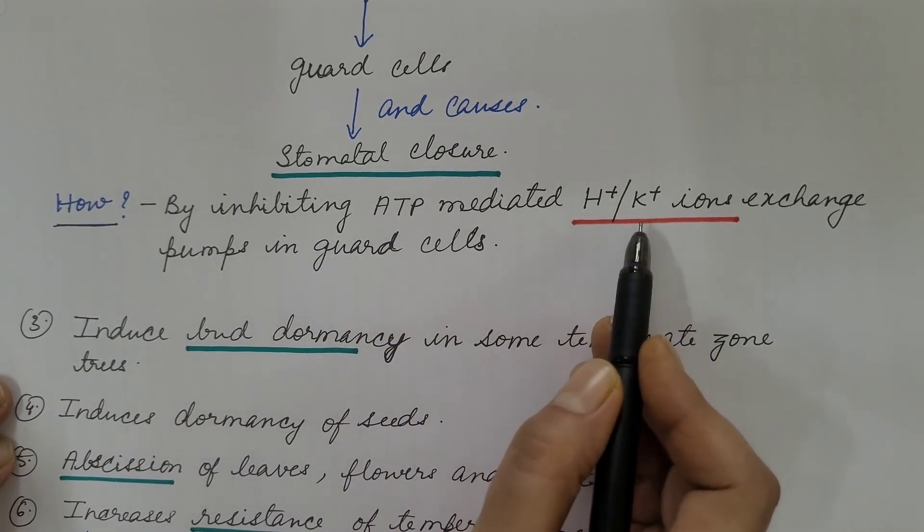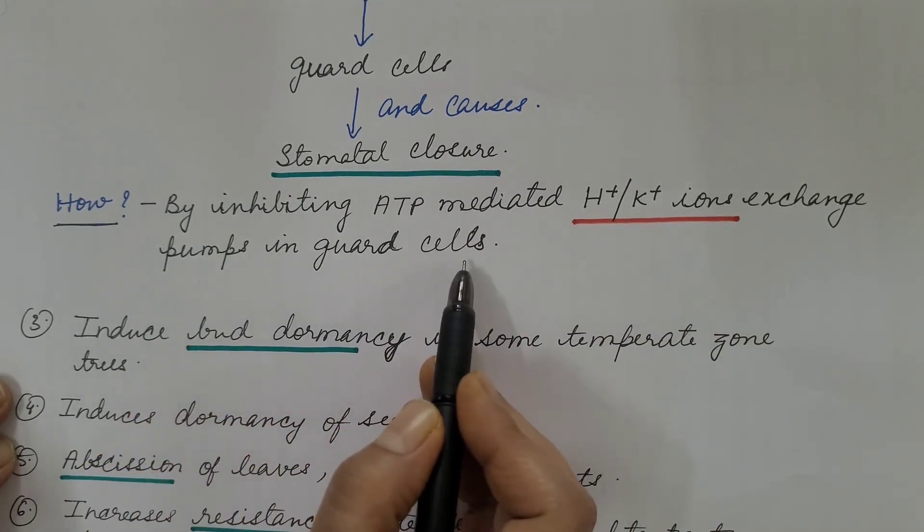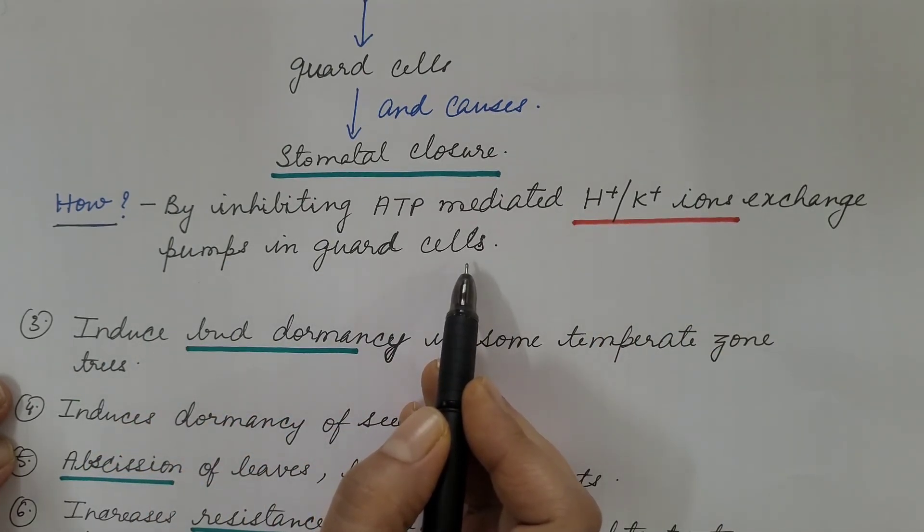How is it possible? Because abscisic acid inhibits ATP-mediated H+ K+ ion exchange pumps in guard cells. This we will discuss in detail in abscisic acid signaling pathway.